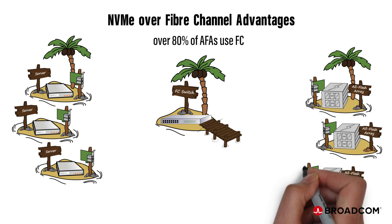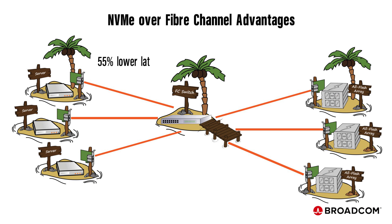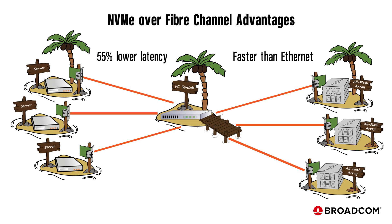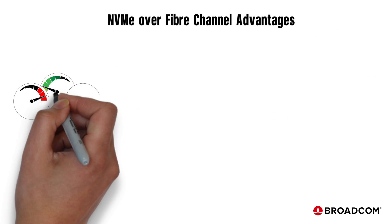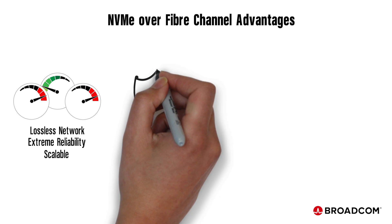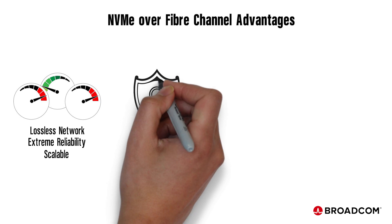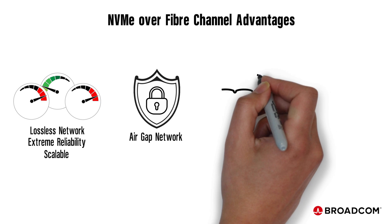NVMe can run over a traditional Fiber Channel network to provide 55% lower latency than SCSI. It delivers higher bandwidth than Ethernet, along with purpose-built storage features. Fiber Channel is lossless, delivers extreme reliability, and it can scale to thousands of nodes. Because Fiber Channel runs on a separate network than Ethernet traffic, it provides an additional layer of security.